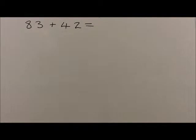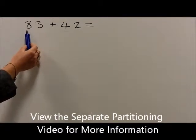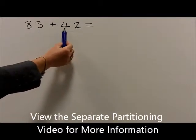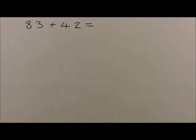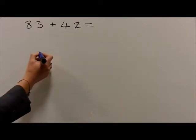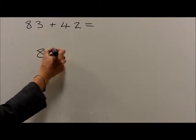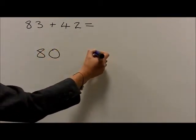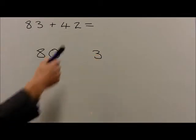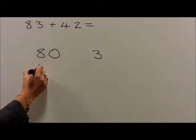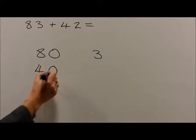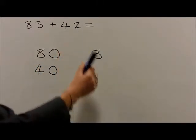For example, with the question 83 plus 42, both numbers are partitioned into their respective tens and units. So 83 is written as 8 tens, which are 80, and 3 units, which are 3. 42 is written as 4 tens, which are 40, and 2 units, which are 2.